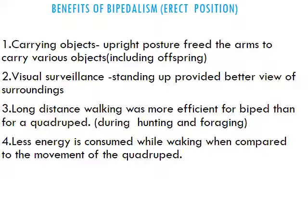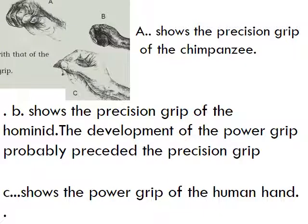Three hand forms are shown: A shows a grip like that of a chimpanzee, B shows the precise grip of hominids, and C shows the power grip of the human hand. The A grip is for holding branches; the B grip is for holding tools; and C represents a grip like holding a pen. This shows the evolution in the way of gripping things.